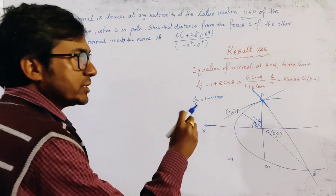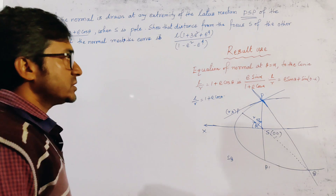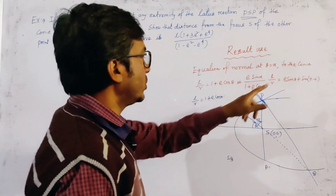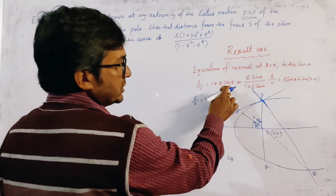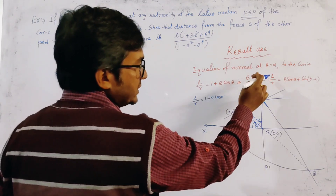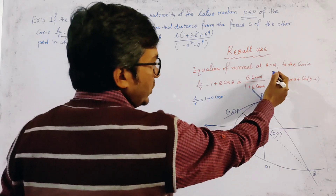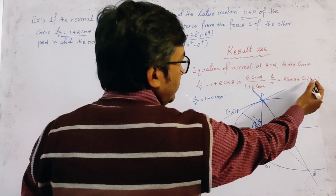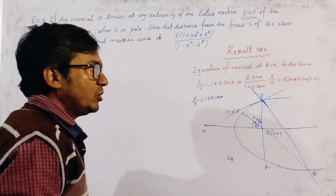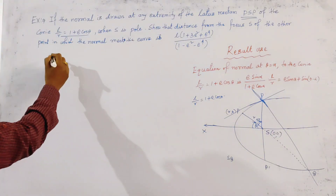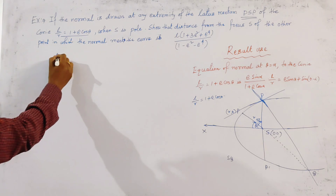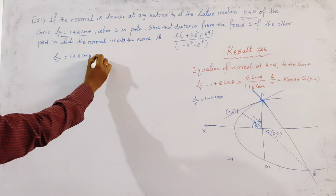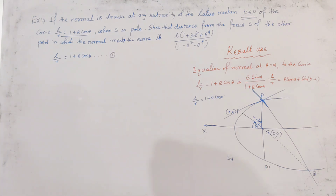We use an important result of the polar equation: the equation of the normal at any point θ = α to the conic L/R = 1 + E cos θ is given by (E sin α)/(1 + E cos α) · (L/R) = E sin θ + sin(θ − α). This is relation number 1: L/R = 1 + E cos θ.